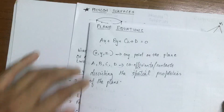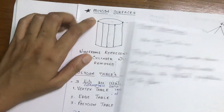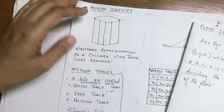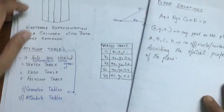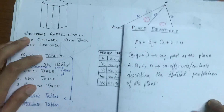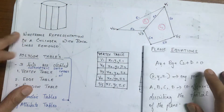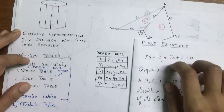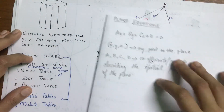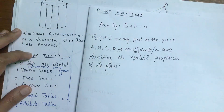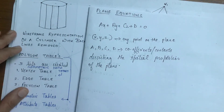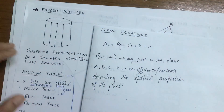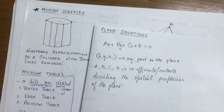So you have polygon surfaces, and in polygon surfaces you have polygon tables and plane equations. This is all about polygon surfaces as a 3D object representation technique. Thank you.